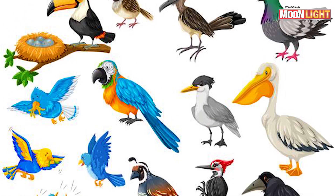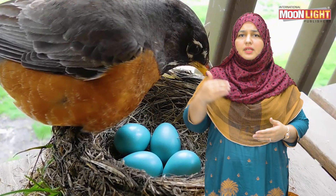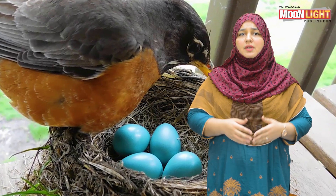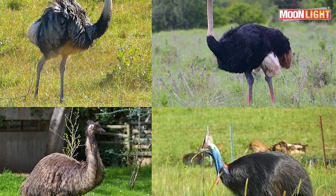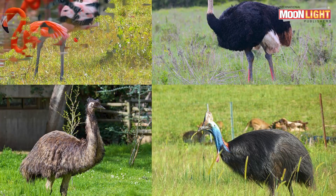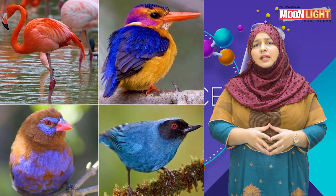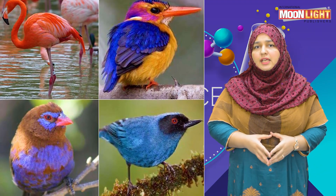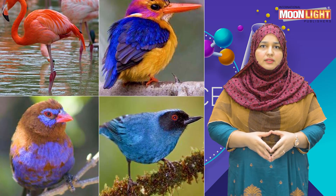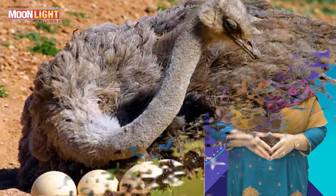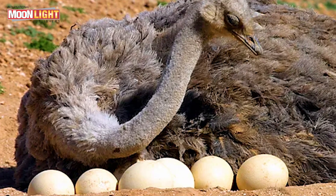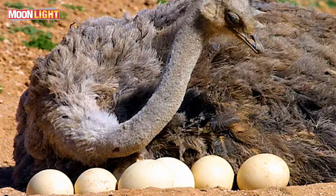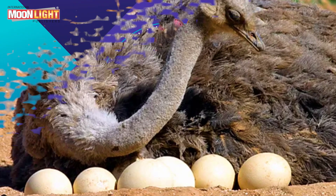Birds are warm-blooded, meaning they do not change their body temperature with the environment. They lay eggs in trees, on the ground, or in nests. Kiwi and ostrich are birds that do not use their wings to fly. Most birds have hollow bones which make them lightweight and help them fly. The ostrich is the largest bird, lays the largest egg, and is the fastest running bird.